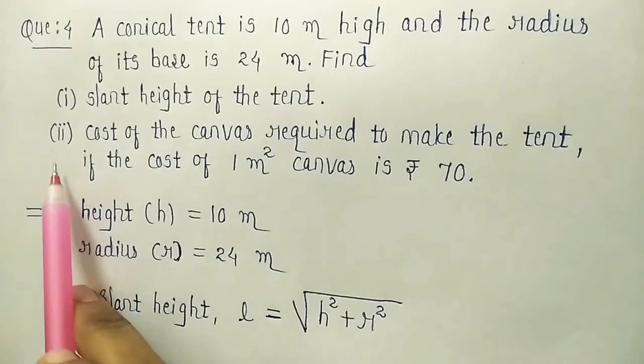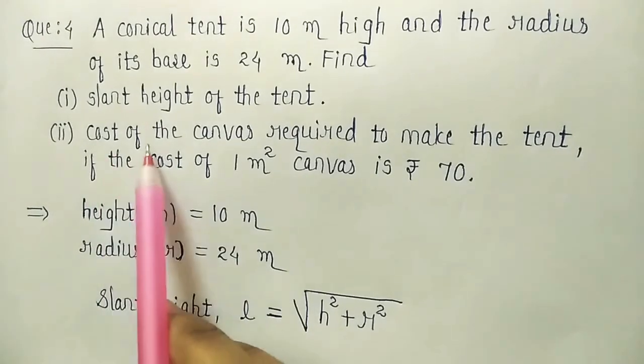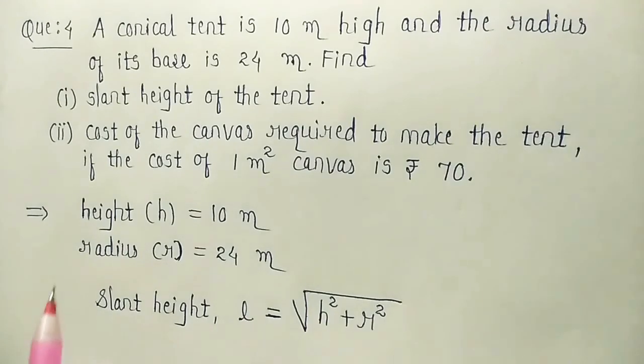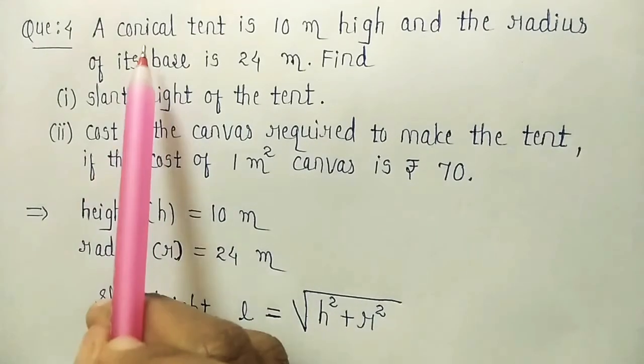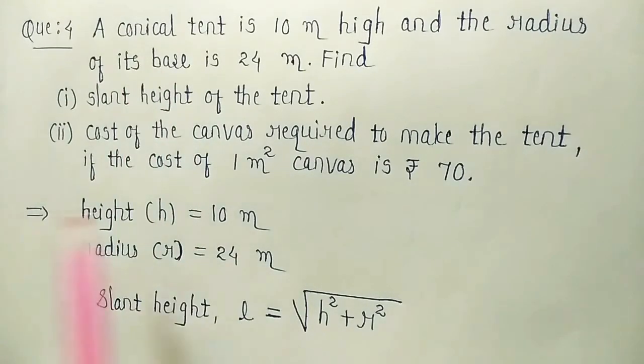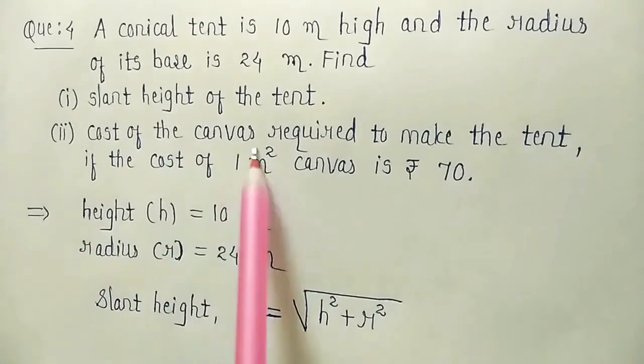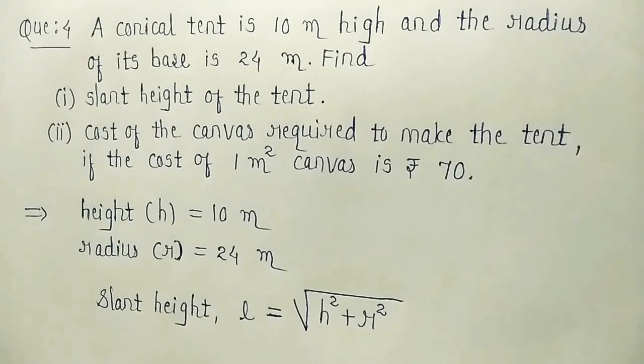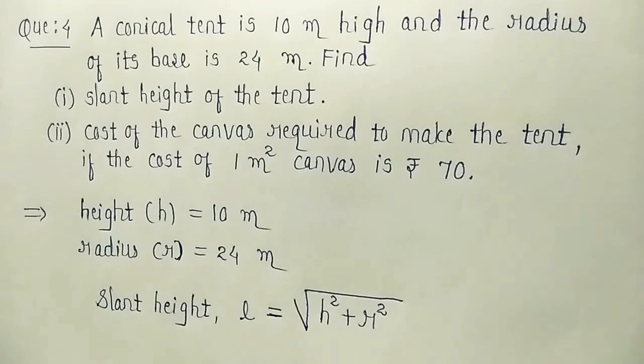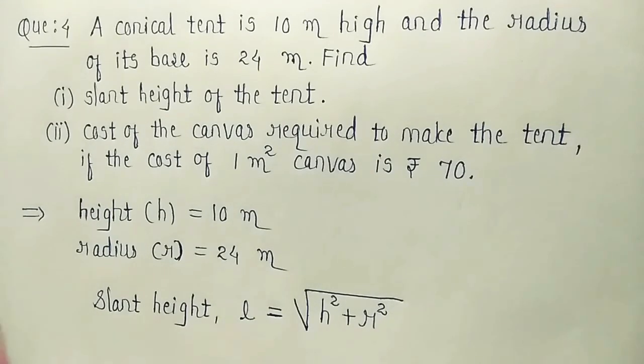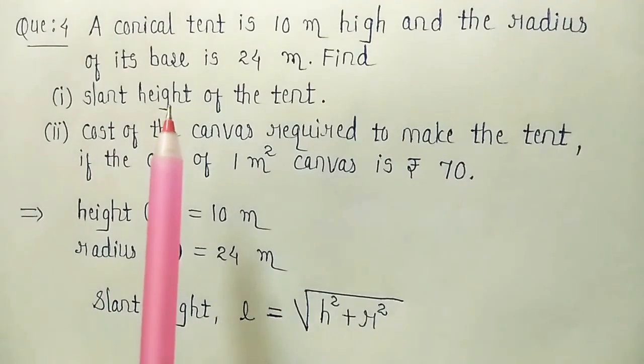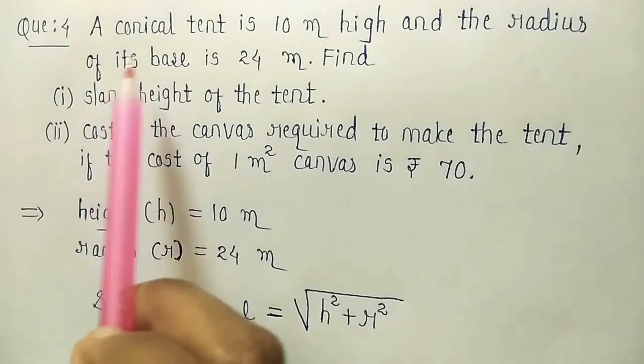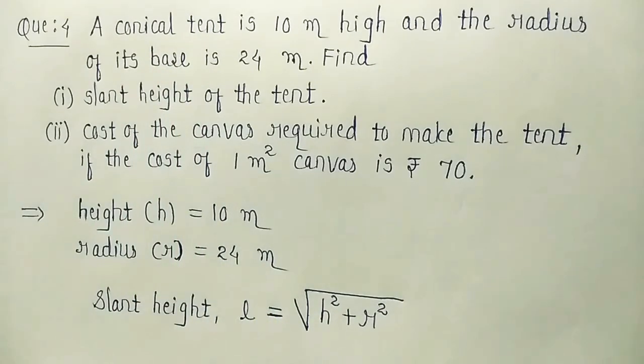Now see in the second we have to find cost of the canvas required to make the tent. Now the tent is in which shape? In the shape of a cone. How will we find how much canvas is required? For that we have to find area. Now which area will we find? See here it is not said that the base area is included. A conical tent that much is only informed.